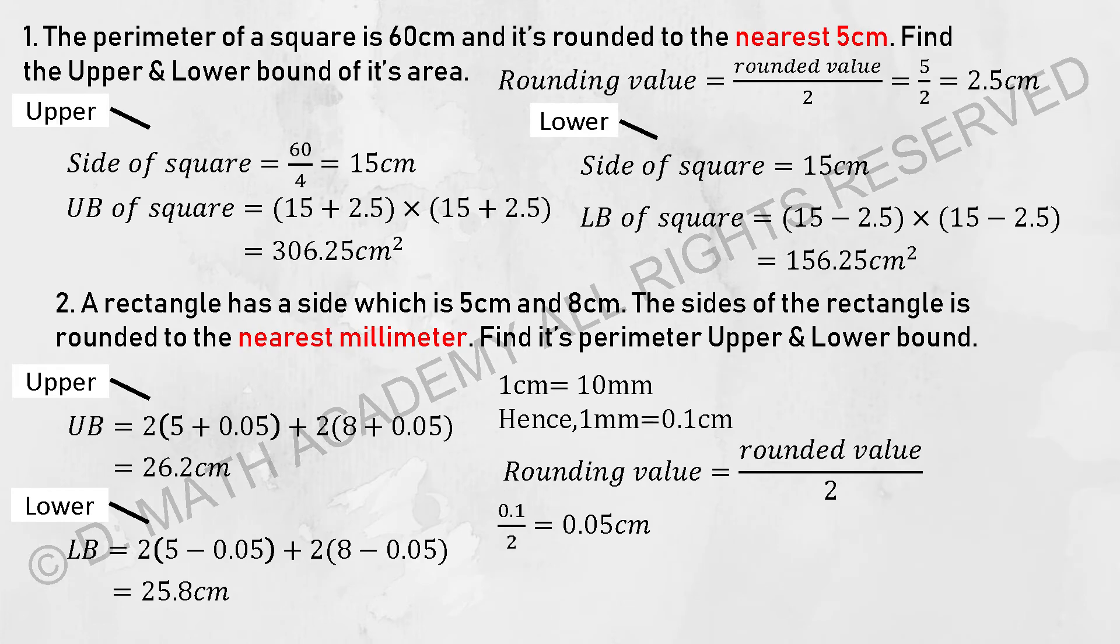For the first question that we have here, the perimeter of a square is 60 cm and is rounded to the nearest 5 cm. Find the upper and lower bound of its area. The thing to take note is to find the rounding value first. By taking the nearest 5 cm divided by 2, you should get 2.5 cm.